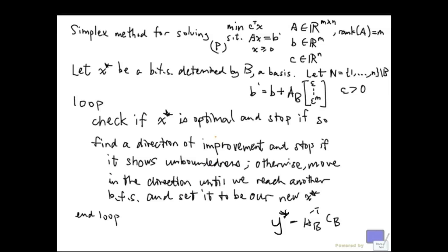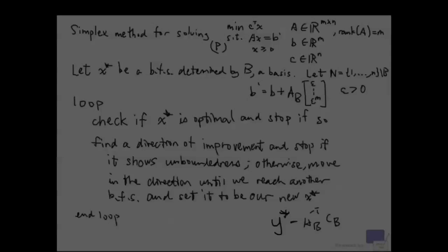So if we have found optimal solution, that final basis B will determine an optimal solution for the original problem. And if we have found something that improves indefinitely, showing unboundedness, that direction will also show that the unperturbed problem is unbounded. And that is a working version of the simplex method that we are looking for.